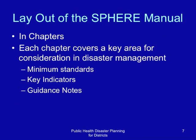The SPHERE manual is laid out in chapters. Each chapter covers a key area for consideration in disaster management. It includes minimum standards, key indicators for those standards, and guidance notes on what to consider in preparing to meet these standards.